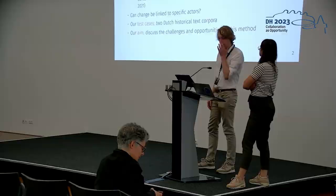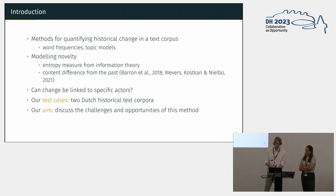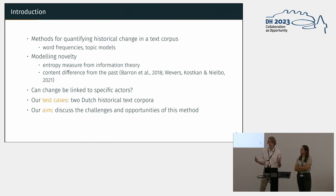Digital humanities has given us quite a lot of methods to quantify historical change in historical corpora: word frequencies, topic models, word embeddings. In the last couple of years, people have been using methods from information theory to study historical change at a more general level. This method called novelty is based on entropy and it basically looks at how innovative a text, a period, or whatever is compared to the past. As such, you can calculate the novelty of a text, which is great because you can assess historical change at a more general level.